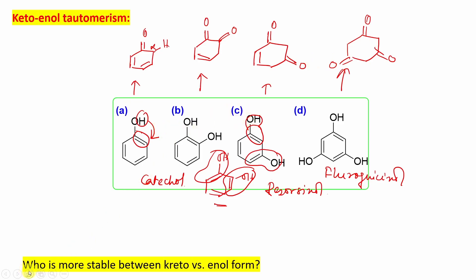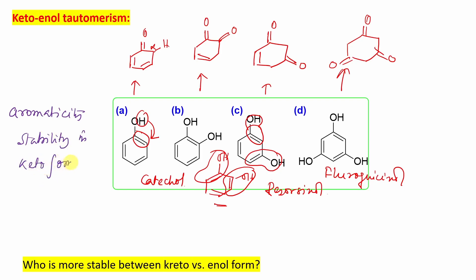Now the question is: which form is stable in each case? If you look at phenol, all these compounds are aromatic in their enol form. So the real question here is aromaticity versus stability in keto form. If asked which is more stable between keto and enol form — keto or enol?